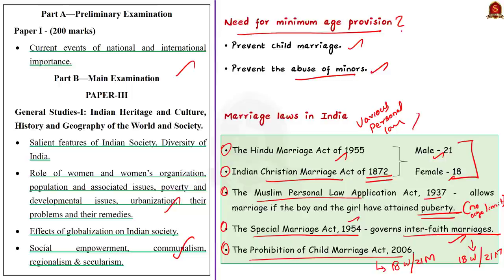To raise the legal age of marriage for women, all these legislations must be amended. In prelims, you can expect a question listing various legislations and asking which ones need to be amended. As discussed, the Hindu Marriage Act 1955, the Christian Marriage Act 1872, the Muslim Personal Law Application Act 1937, the Special Marriage Act 1954, and the Prohibition of Child Marriage Act 2006 all have to be amended to raise the legal age of marriage for women.